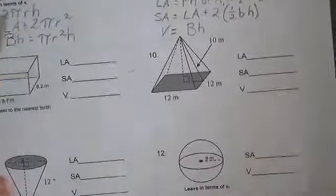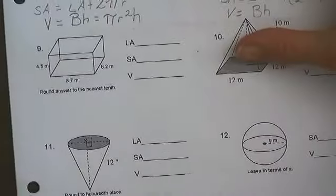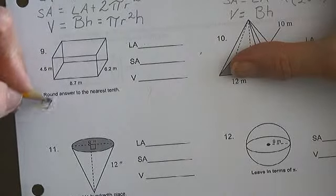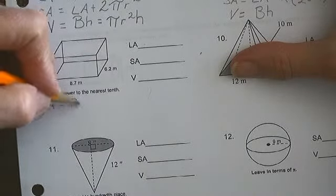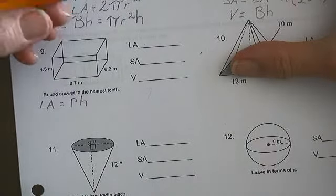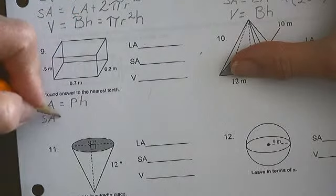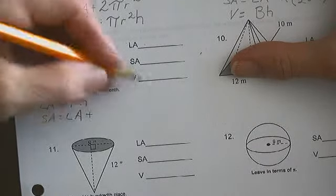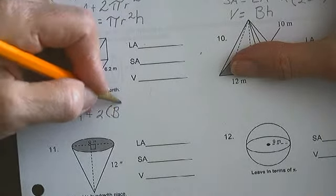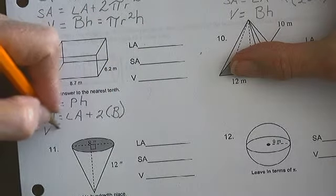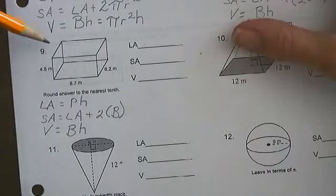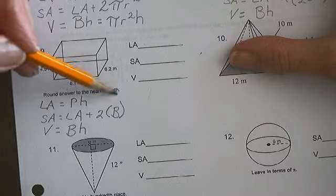Let's do number 9 at the same time. My lateral area is the lateral area plus 2 times the base area. And my volume is equal to the area of the base times the height. Round answer to the nearest tenth. Okay,